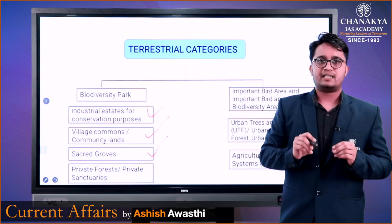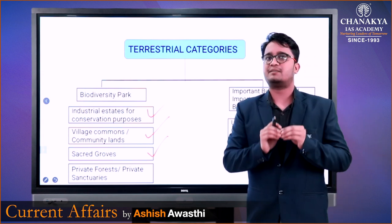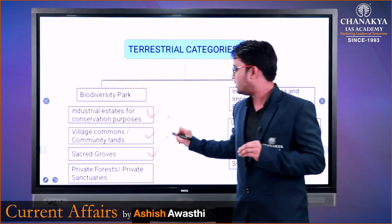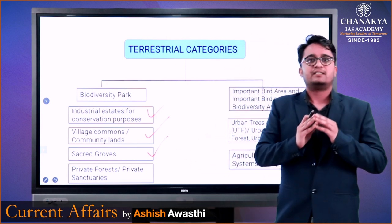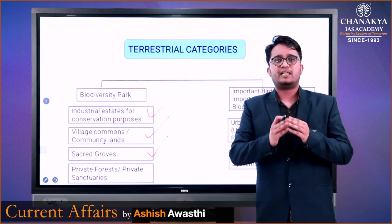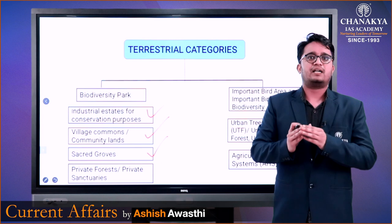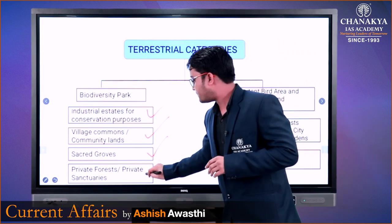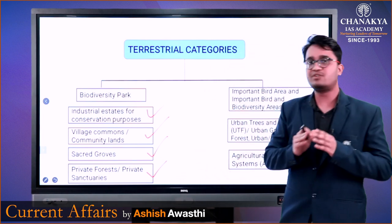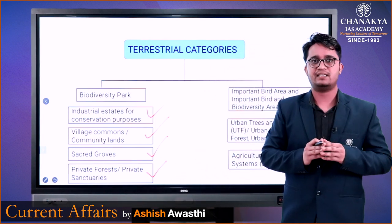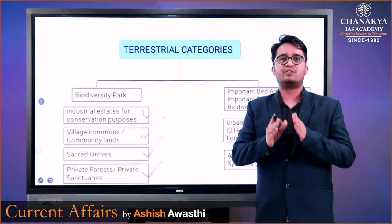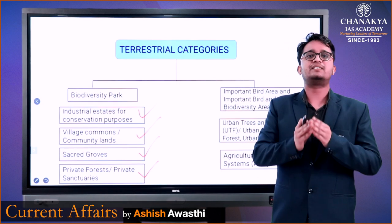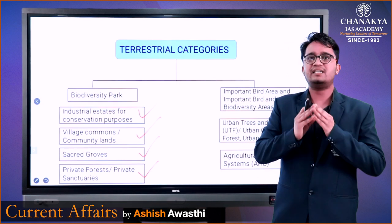Sacred Groves ऐसी Groves होती हैं जो पवित्र मानी जाती हैं। इसके उदाहरण देखें तो अरुणाचल प्रदेश में गुम्फावन और भारत के अलग-अलग राज्यों में ऐसे पवित्र कुंज होते हैं, उनको हम Sacred Groves कहते हैं। इसमें Private Forest और Private Sanctuaries भी शामिल की जाती हैं। अर्थात यदि किसी व्यक्ति का खुद का Farm हो और वहाँ एक Forest Area develop किया जाता है, तो उसे भी OECM का दर्जा दिया जा सकता है।